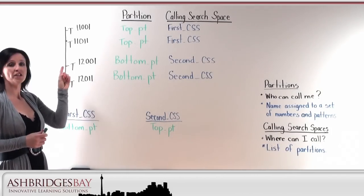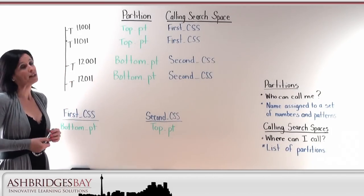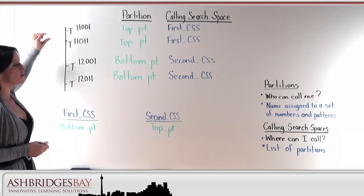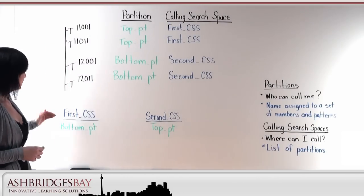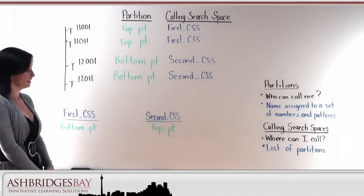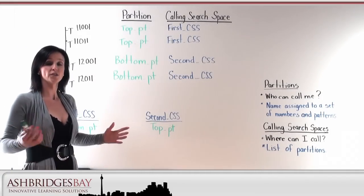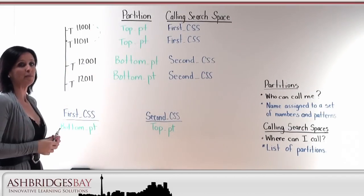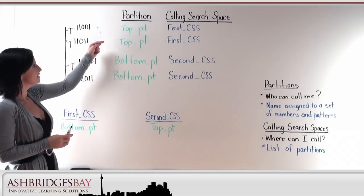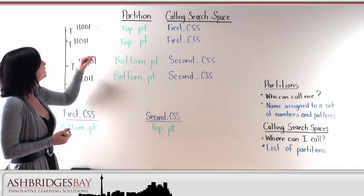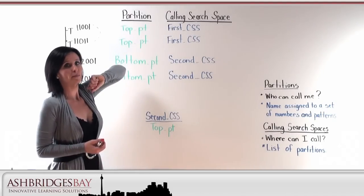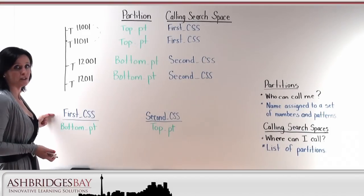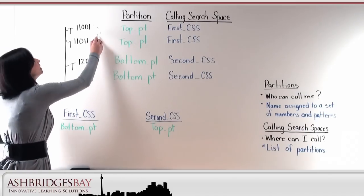What we had configured so far was a partition on each one of these lines, and nobody could call anybody because we hadn't yet configured our calling search space. So I went ahead and gave these two lines the first calling search space and these two lines the second calling search space. The first calling search space has the bottom partition in it and the second calling search space has the top partition in it. Can I make a call from this line to this line? Intuitively people say yes, assuming that if a number is in the same partition as yours, you can call it. The first number has the first calling search space, and this number is in the top partition. So is the top partition in the first calling search space? No, it's not. So you cannot make that call.